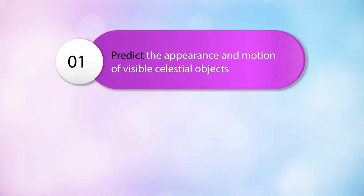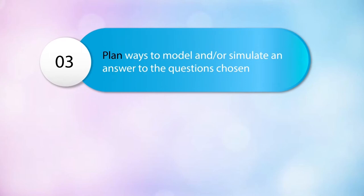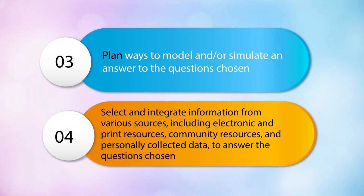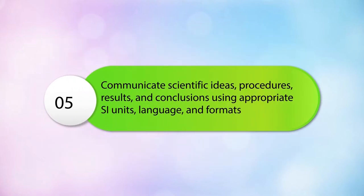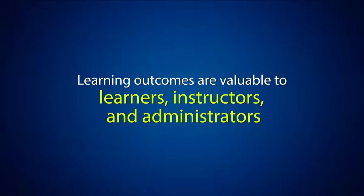Let us look at some examples of learning outcomes. By the end of this course, students will be able to: predict the appearance and motion of visible celestial objects; formulate scientific questions about the motion of visible celestial objects; plan ways to model and/or simulate an answer to the questions chosen; select and integrate information from various sources including electronic and print resources, community resources, and personally collected data; and communicate scientific ideas, procedures, results, and conclusions using appropriate SI units, language, and formats.